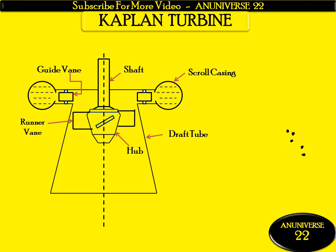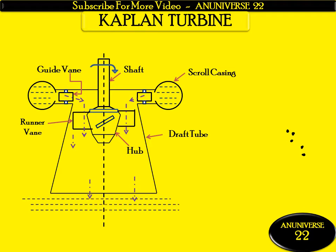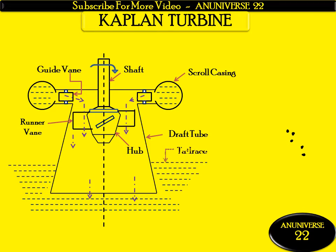Water starts from the scroll casing and passes through the guide vanes. The water that is discharged is parallel to the axis of the shaft. As the water strikes on these vanes, the runner starts to rotate and it will rotate the shaft coupled with it. Finally, the water is discharged through the draft tube towards the tailrace. This is the tailrace — the top surface of the water is the tailrace.